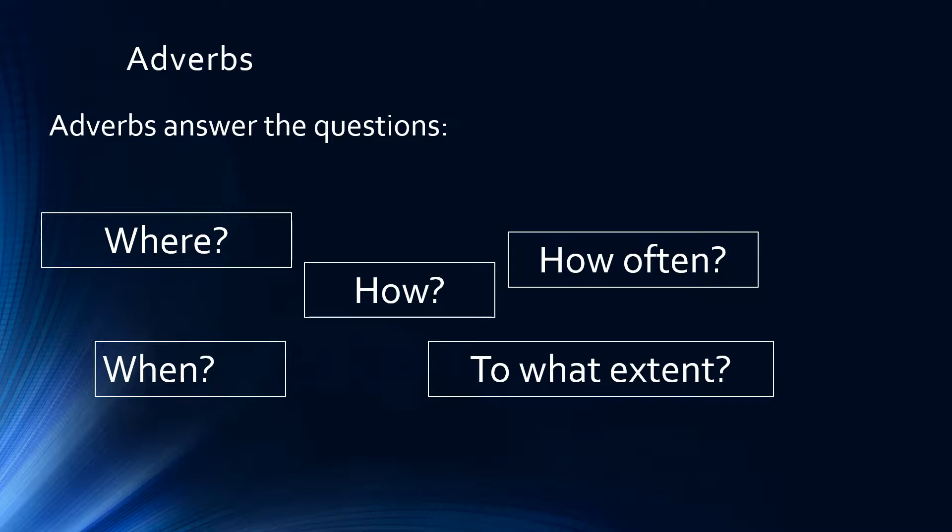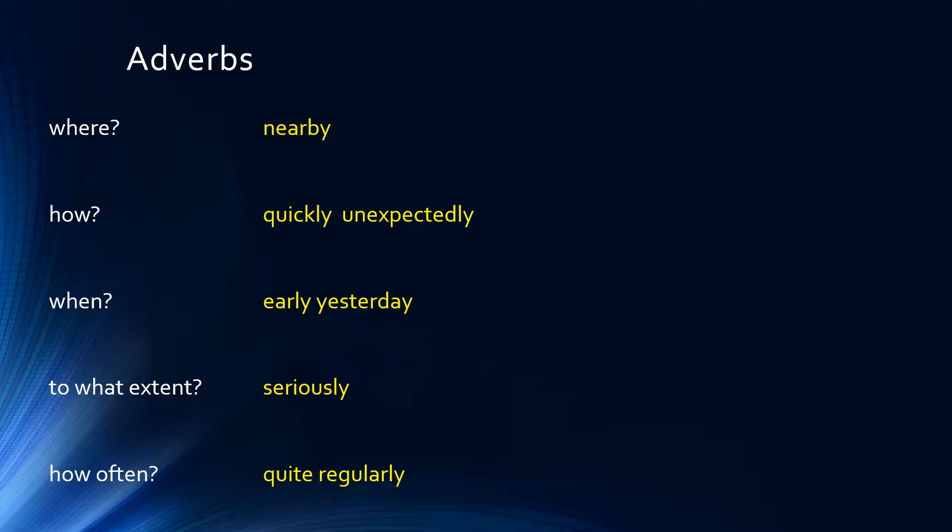Adverbs answer the following questions: Where? How? How often? When? Or to what extent? For example, 'where' could be answered by 'nearby'; 'how' by 'quickly' or 'unexpectedly'; 'when' by 'early' or 'yesterday'; 'to what extent' by 'seriously'; and 'how often' by 'quite regularly.'